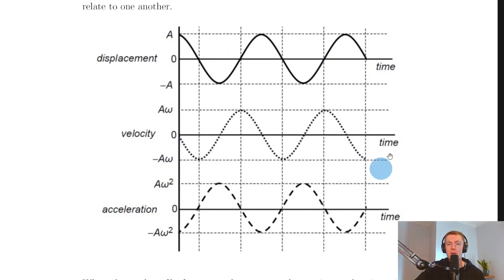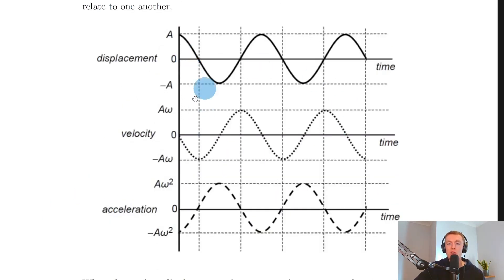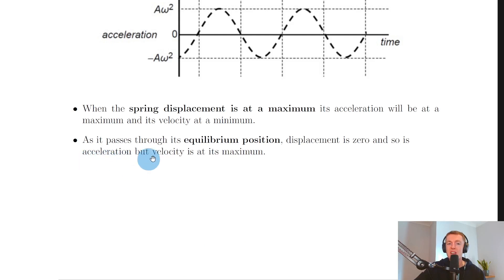Now let's look at a few specific points on these graphs to see how they relate at different moments in time. When the spring displacement is at a maximum, its acceleration will also be at a maximum and its velocity at a minimum. We can see this holds true from the graphs: when y equals A, the velocity is zero at those points, but the acceleration is at its maximum value.